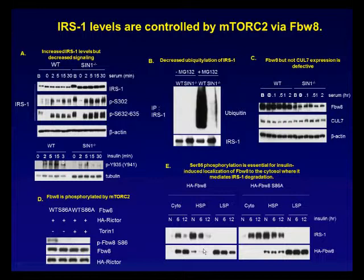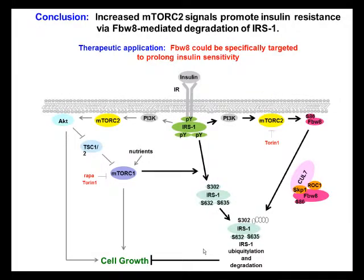Together, our data revealed that IRS1 protein levels are controlled by mTORC2 via regulation of FBW8 stability. In conclusion, our studies showed that in addition to enhanced mTORC1 signaling, which leads to IRS1 serine phosphorylation as shown on the left side of the diagram, increased mTORC2 signals act in concert to promote insulin resistance due to degradation of IRS1 mediated by the CUL7-FBW8 ubiquitin ligase complex, as illustrated on the right side of the diagram. Our findings imply that instead of inhibiting both mTOR complexes, which would have the undesirable effect of promoting insulin resistance, insulin sensitivity could be enhanced by specific inhibition of IRS1 serine phosphorylation and targeting FBW8 to prevent IRS1 degradation.